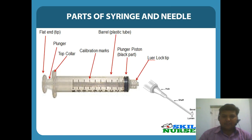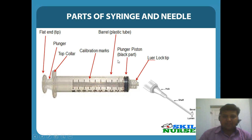The needle has several parts: the starting point, the slanted part is called the bevel, the inside hole is called the lumen, the cylindrical part of the needle is the shaft, and the broad plastic end of the needle is called the hub. For the syringe: the starting tip is called the Luer lock tip, which can be attached to the needle or to a venous cannula. The inside black part of the syringe is called the plunger or piston. The outside part is called the barrel, which is a plastic tube with calibration marks on it. The last part that extends outward is called the top collar or flange, and the inside of the syringe ends with a flattened plunger tip.